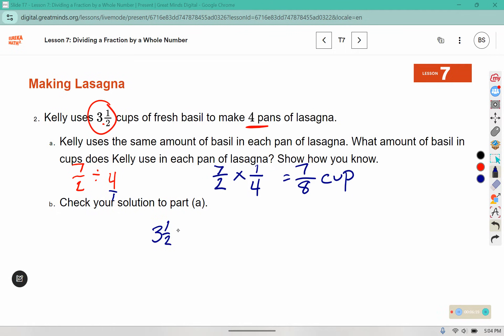So she uses 7/8 of a cup of basil in each pan of lasagna. Now we're going to check. 3½ is 4 times what number? We're replacing it with 7/8 to check. 7 times 4 is 28. There's an invisible one down there, so 1 times 8 is 8. 8 fits into 28 three times because 3 times 8 is 24. And then we need 4 extra: 24, 25, 26, 27, 28 out of 8. So 4/8 does reduce to 1/2. So 7/8 is the correct amount.